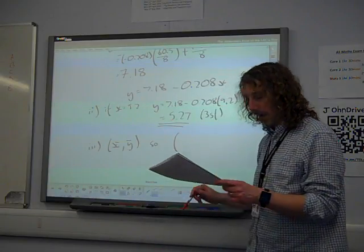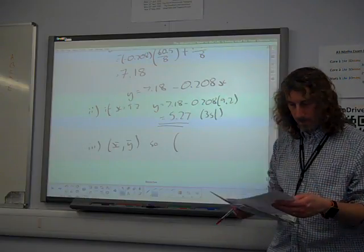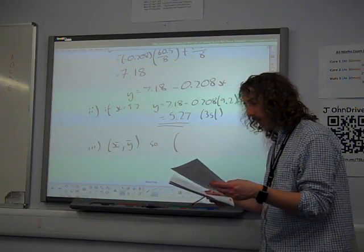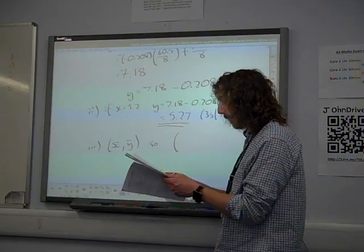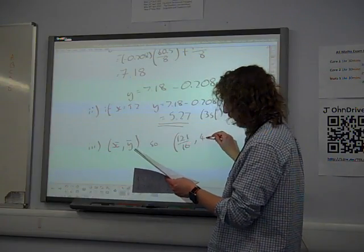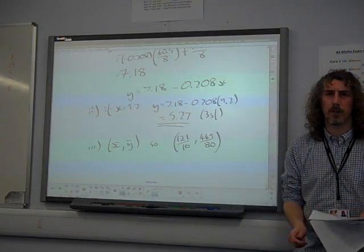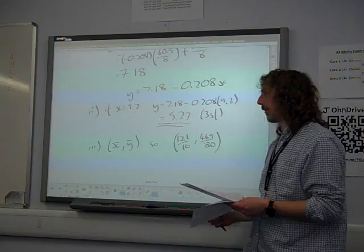So all they're wanting you to do here for this one mark is to write the coordinates of x bar, y bar. Of course, you need to write them not with x and y numbers, but with the actual numbers. So that is, I've just noticed, oh no, I've got it right. I've put this down as exact numbers, 121 over 16 and 449 over 80, but if you put the decimals to three significant figures, you've got the mark just as much.